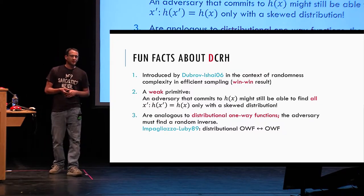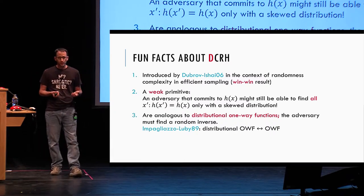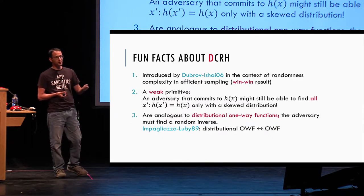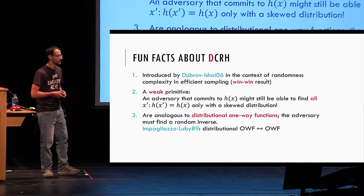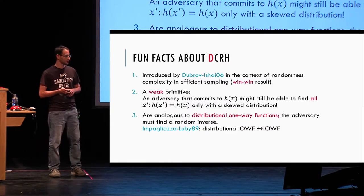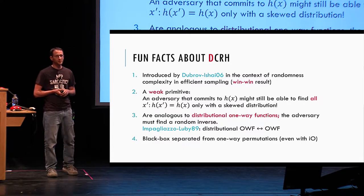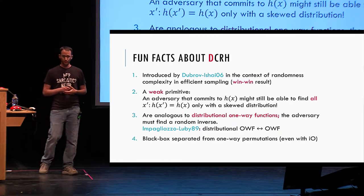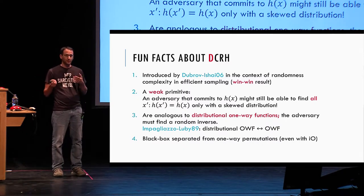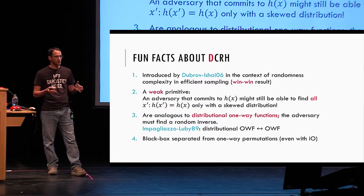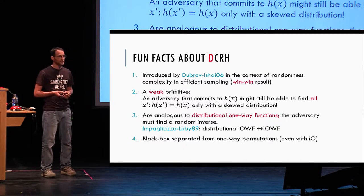DCRH are the analog of distributional one-way functions, where the task is to find a random pre-image. Impagliazzo and Luby showed that for one-way functions, the distributional and standard versions are existentially equivalent. But this seems unlikely in the case of CRH. Furthermore, DCRH are actually black-box separated from one-way permutations, even with obfuscation. All the black-box results separating CRH from one-way permutations — if you look at the proofs — actually separate one-way permutations from DCRH as well.